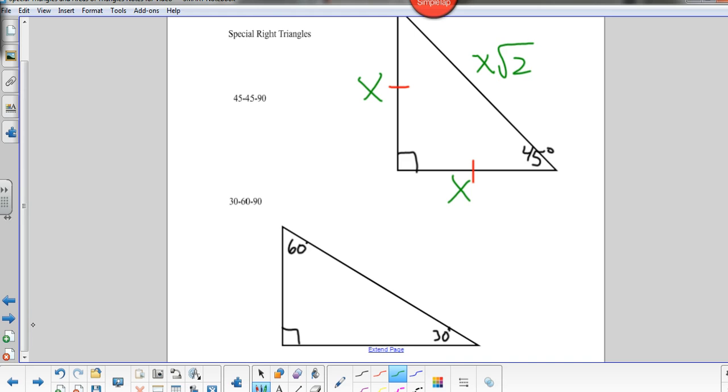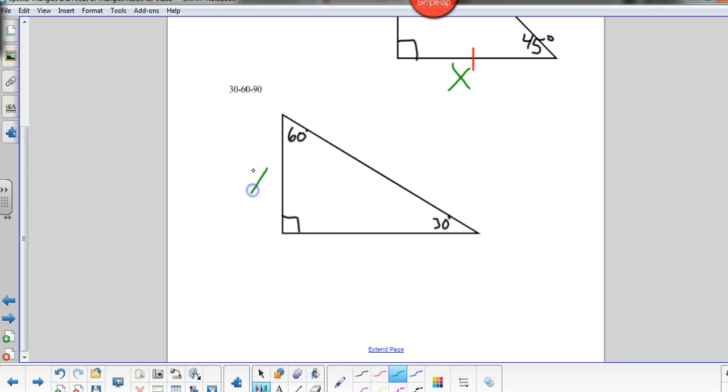Another special right triangle is a 30-60-90 right triangle. 30-60-90 because we've got a right triangle, one angle's 60, one angle's 30. So 30-60-90 right triangle. They also have a special relationship between the sides. Usually we call the smallest leg x. The hypotenuse is going to be double that, or 2x.